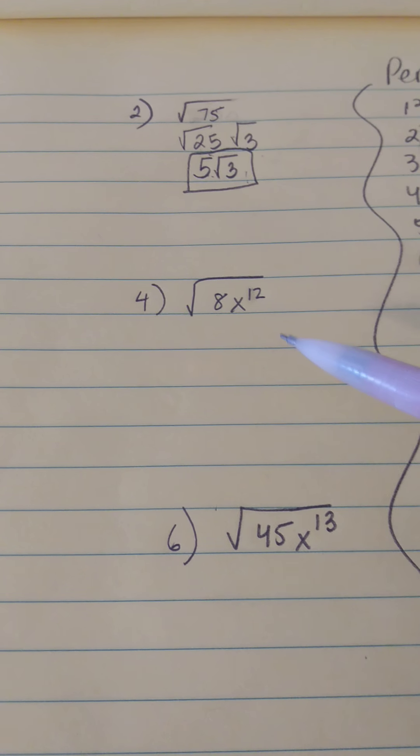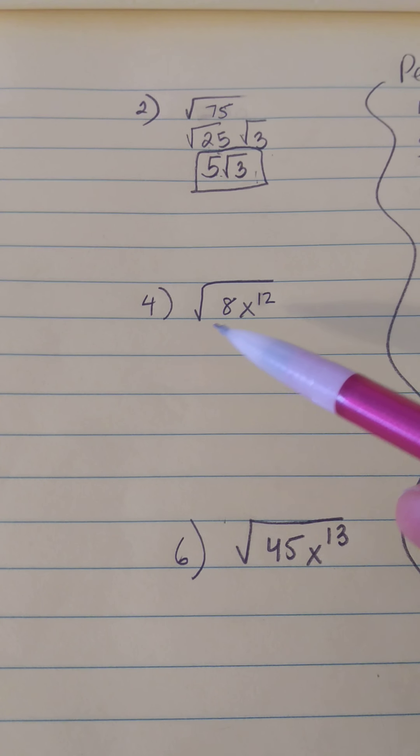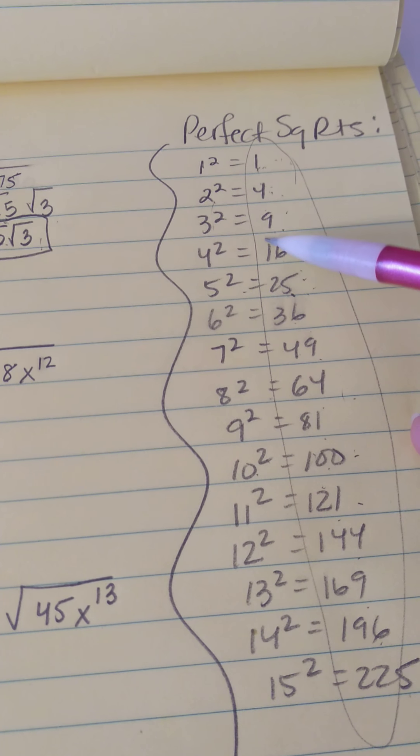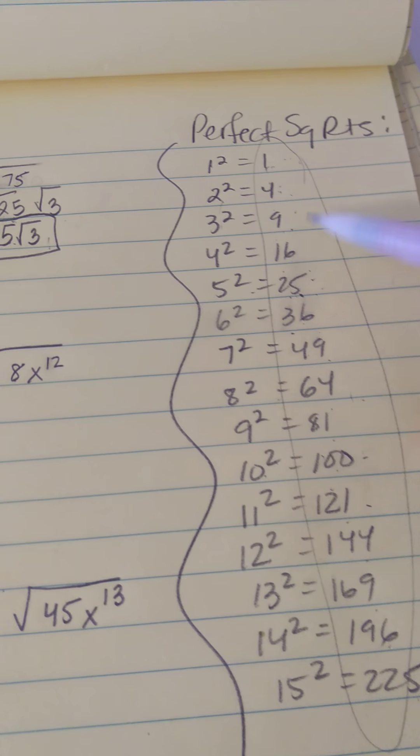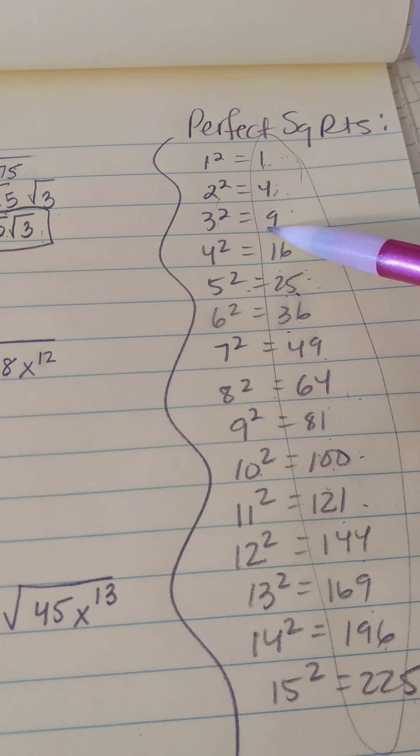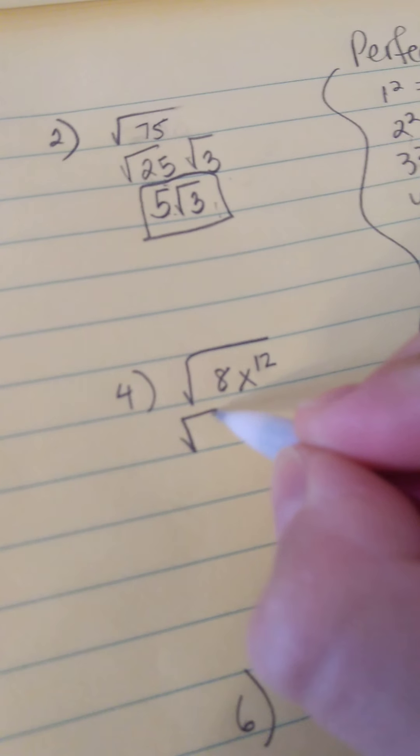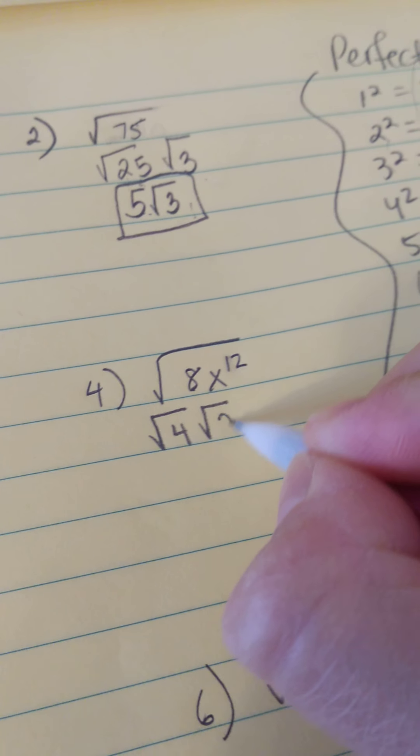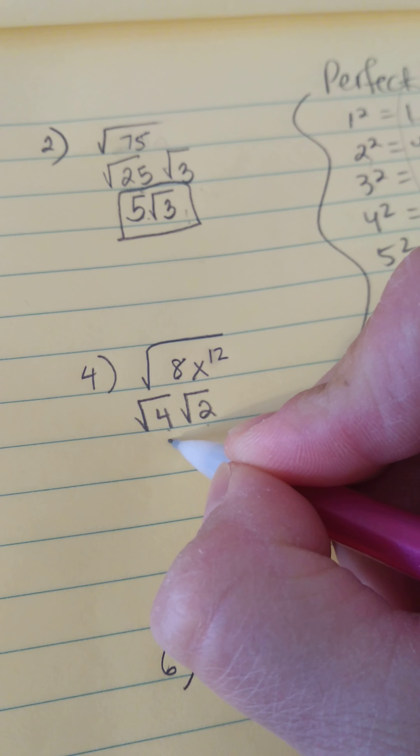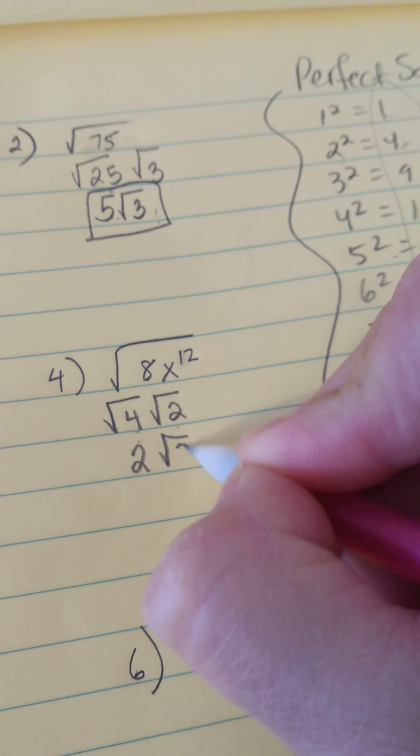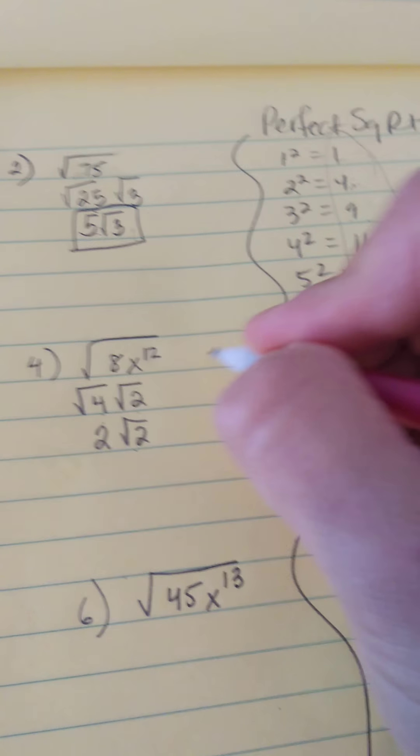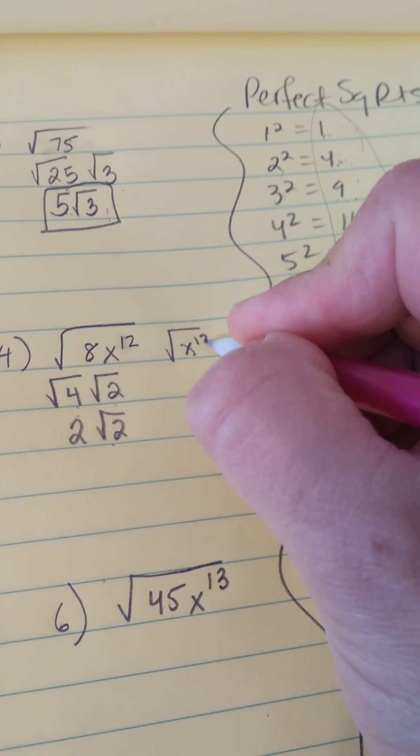Okay, so now the ones with the variables. Deal with them as two separate problems. So do the coefficient first, the square root of 8. What is the largest perfect square root that divides into 8? Well, obviously I have to stop here because this one's bigger, and it is 4. 4 divides into 8 twice, or 4 times 2 is 8. The square root of 4 simplifies to 2, and the square root of 2 is prime, so it just stays that way.